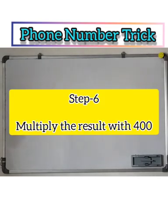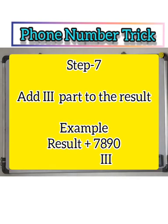Step 6: Multiply the result with 400. Step 7: Add the last part, that is the last four digits, to the result.